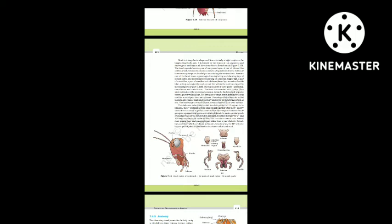The mouthparts consist of a labrum (upper lip), a pair of mandibles, a pair of maxillae and a labium (lower lip). A median flexible lobe acting as tongue, the hypopharynx, lies within the cavity enclosed by the mouthparts. The thorax consists of three parts: prothorax, mesothorax and metathorax. Each thoracic segment bears a pair of walking legs. The first pair of wings arises from the mesothorax and the second pair from the metathorax.